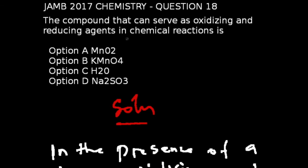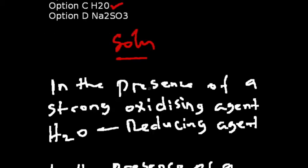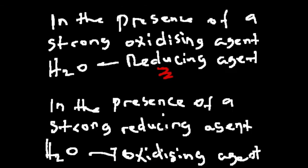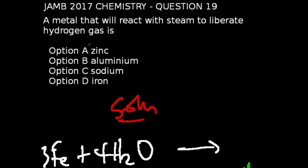Question number 18 of the JAMB 2017 chemistry exams: The compound that serves as an oxidizing and reducing agent in chemical reaction is... The correct answer to this question is option C, which is water. In the presence of a strong oxidizing agent, water becomes a reducing agent. And in the presence of a strong reducing agent, water becomes an oxidizing agent, probably because of the presence of hydrogen and oxygen.